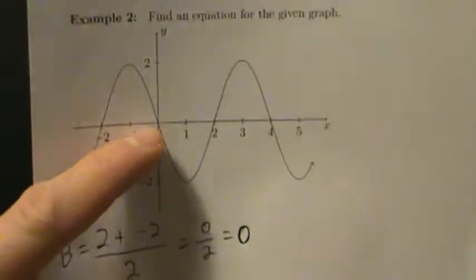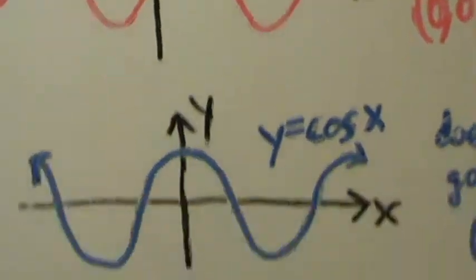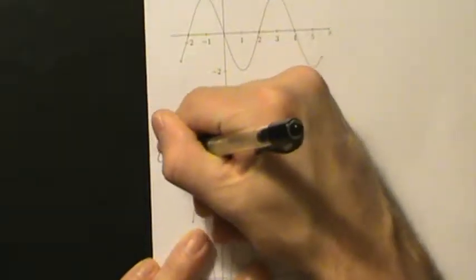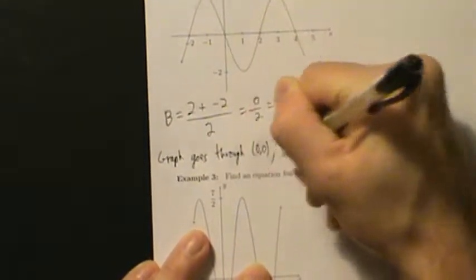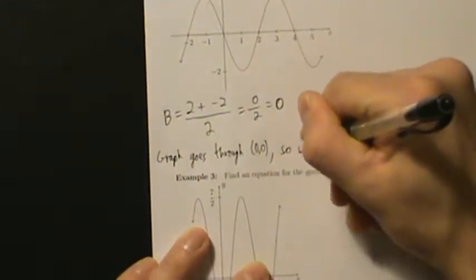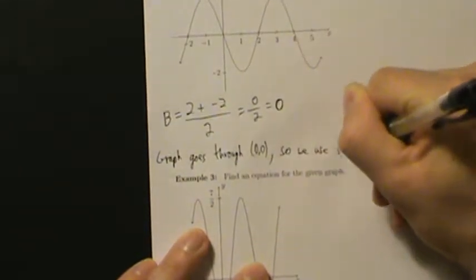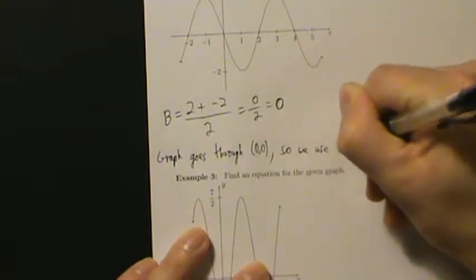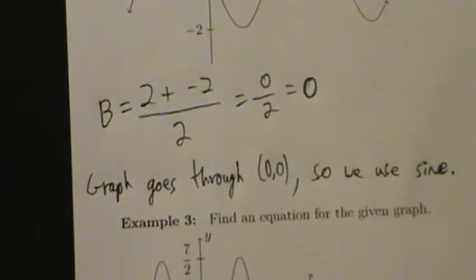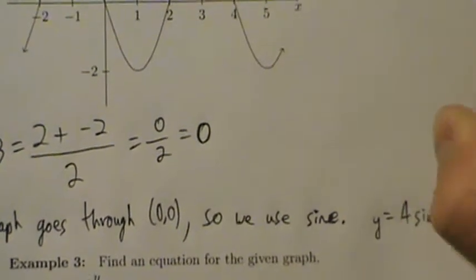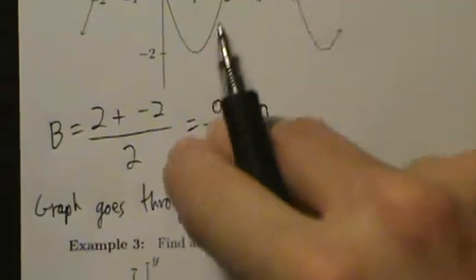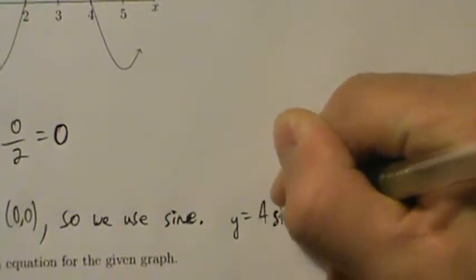We look at our graph and see that it does go through (0, 0), so it's going to be a sine function, not cosine. Since the graph goes through (0, 0), we use sine. So far we have y = A·sin(ωx). Since B is zero, there's no plus B term.